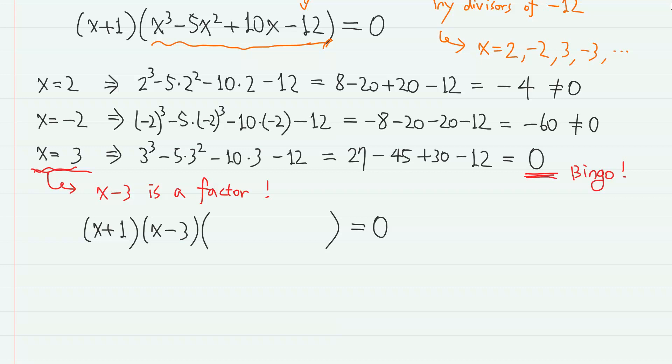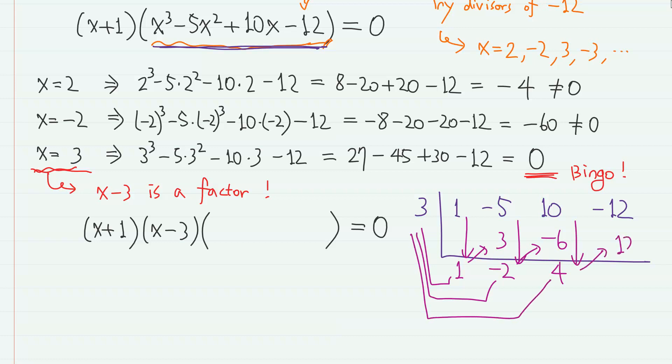So doing the synthetic division again. Now coefficients of this polynomial. So 1, minus 5, 10, minus 12. And we are dividing with x minus 3, so 3 here. So this 1 goes down. And 3 times 1 gives 3. So we have minus 2. And 3 times minus 2 gives minus 6. So we have 4. And 3 times 4 gives 12. So we have remainder 0. And the quotient is x squared minus 2x plus 4.